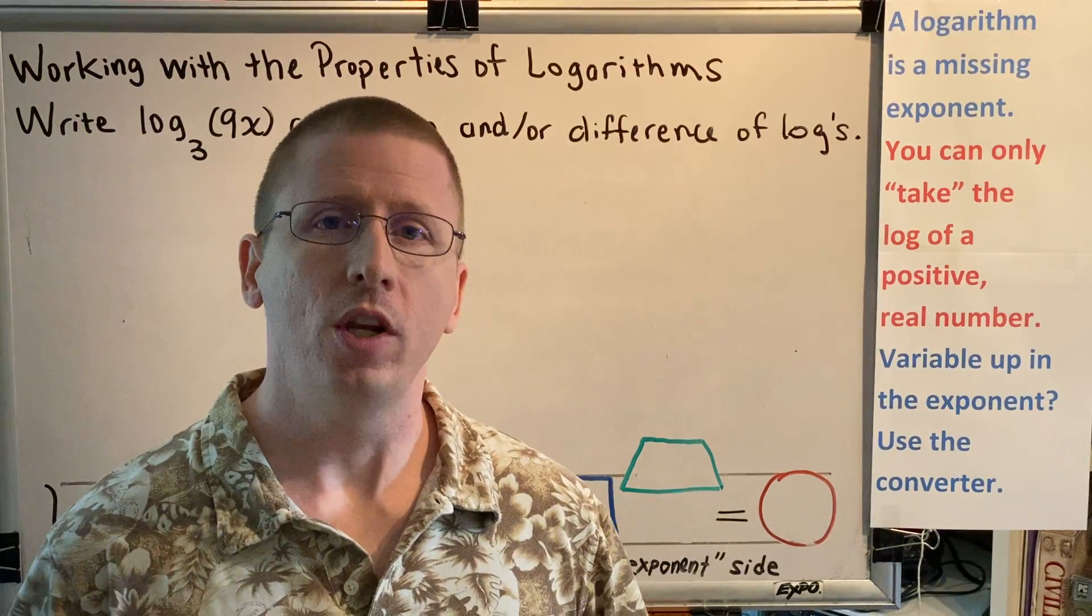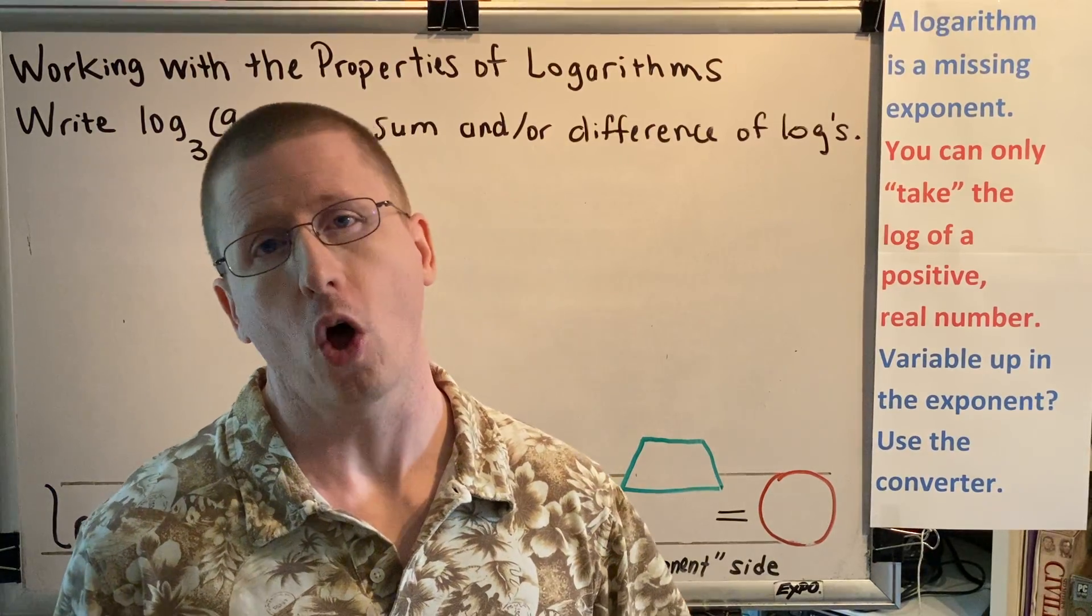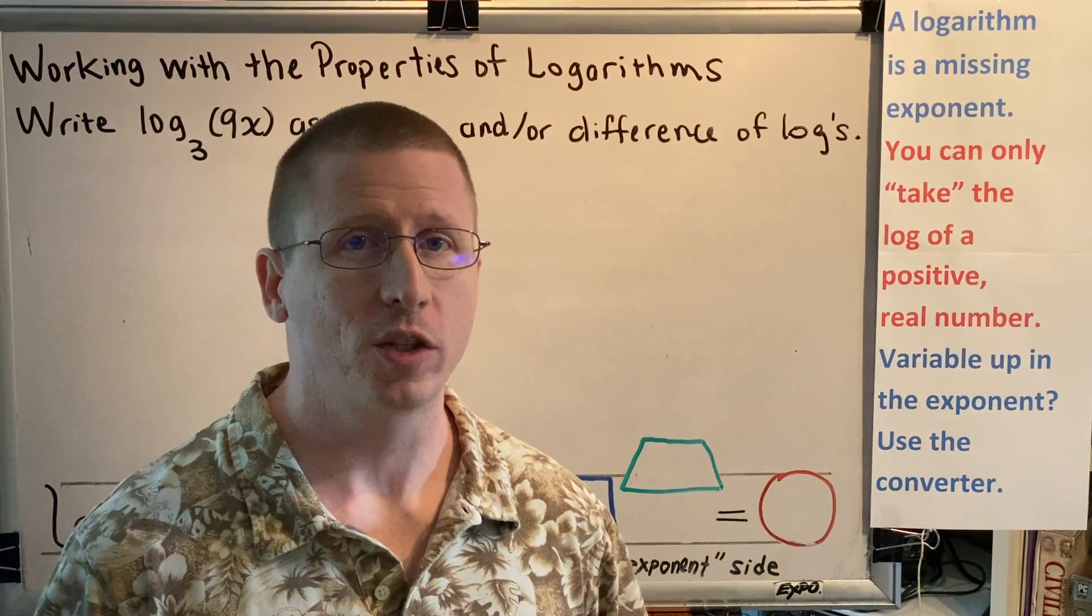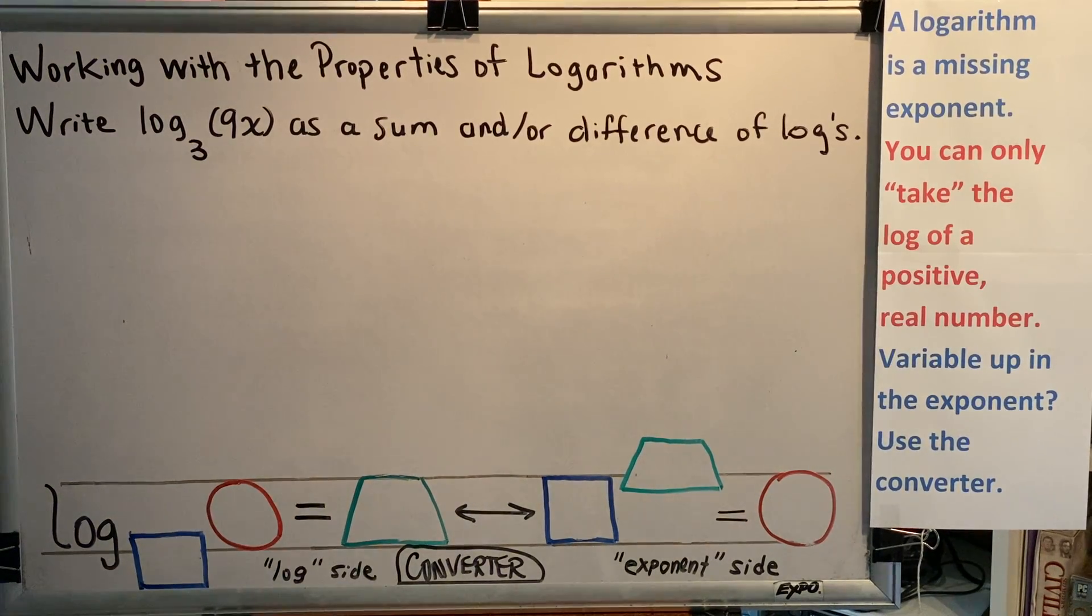So, we're going to go to our list of log rules and see if we can find some rules that involve two logs being added or two logs being subtracted. When we look at our list of rules, we see that in our first column, rule 6 on the right-hand side has two logs that are being added and rule 7 on the right-hand side has two logs that are being subtracted. So, it's very likely that one of those log rules is going to be helpful to us.